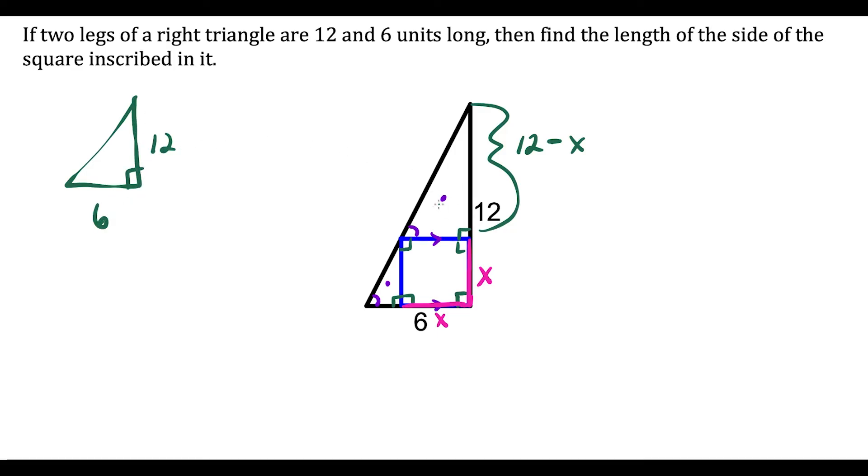And now this medium right triangle—notice that the medium one, one of the sides here, the leg, is length x because that's sitting on the square. And then this vertical leg we could call 12 minus x.